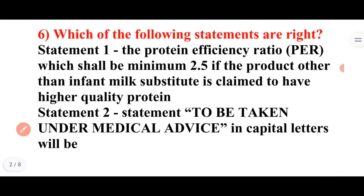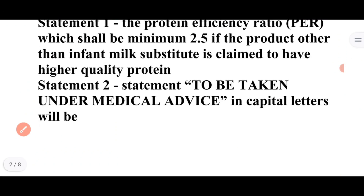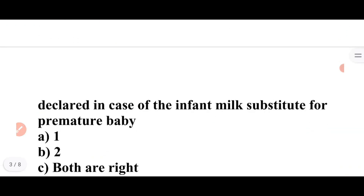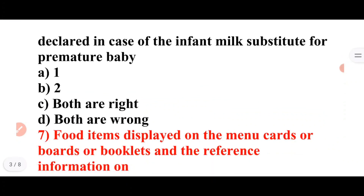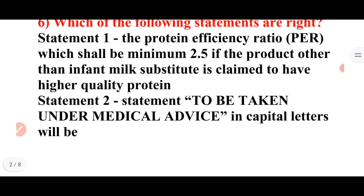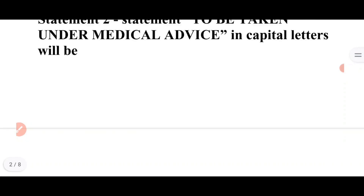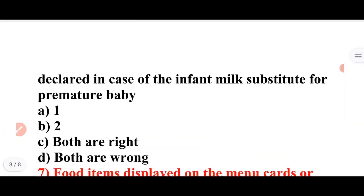Which of the following statements are right? Statement 1: The protein efficiency ratio (PER) shall be minimum 2.5 if the product other than infant milk substitute is claimed to have higher quality protein. Statement 2: 'To be taken under medical advice' in capital letters shall be declared in case of infant milk substitute for premature babies. Answer: Both statements are correct.